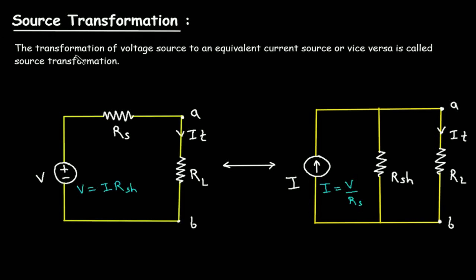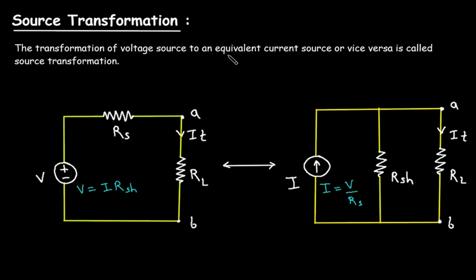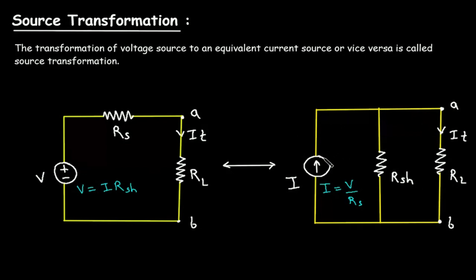Source Transformation: The transformation of a voltage source to an equivalent current source, or vice versa, is called source transformation. Here we can see in this circuit, this is a voltage source, and here in this circuit we have converted this voltage source into its equivalent current source.